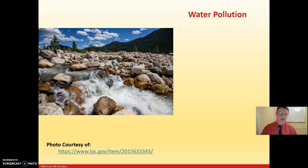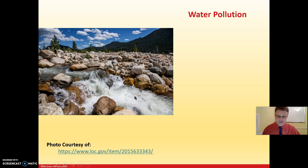So one concern is overuse. The textbook also mentions global climate change, which can affect the timing of water cycles. A third concern is water pollution. Other than occasional crises like Flint, the United States on the whole has pretty good water quality.